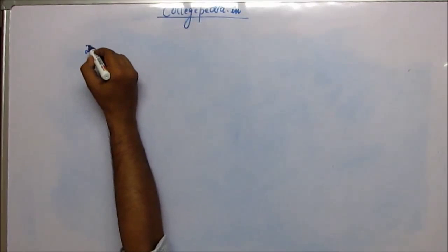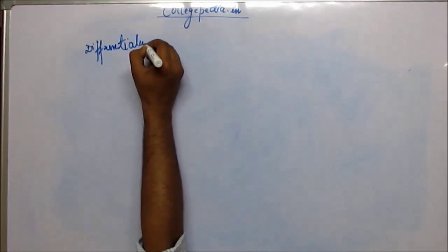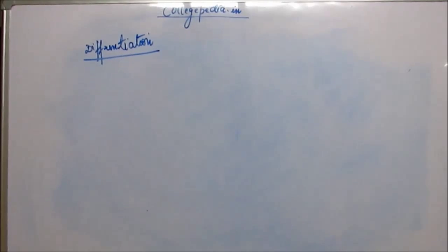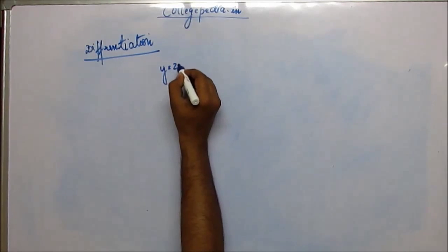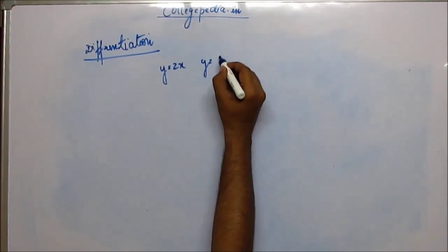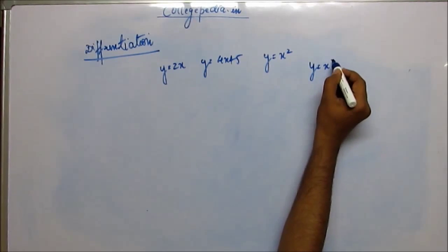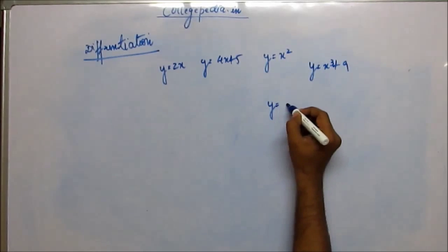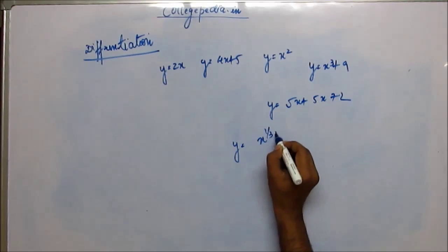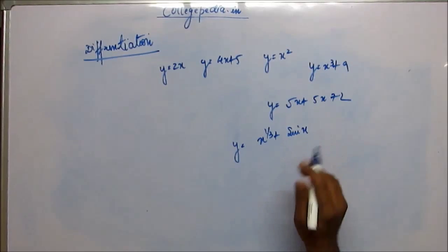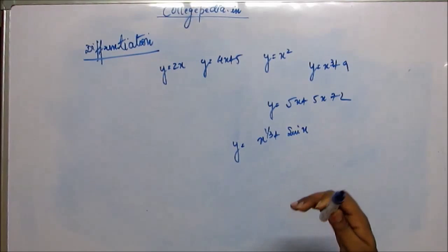What I am going to teach you is called differentiation. Suppose y is a function of x — suppose y is equal to 2x, or y is equal to 4x plus 5, or y is equal to x squared, or y is equal to x cubed plus 9, or y is equal to root x plus 5x plus 2, or y is equal to x to the power 1/3 plus sin x. When we have cases like these, y is said to be a function of x, meaning y is dependent on x.